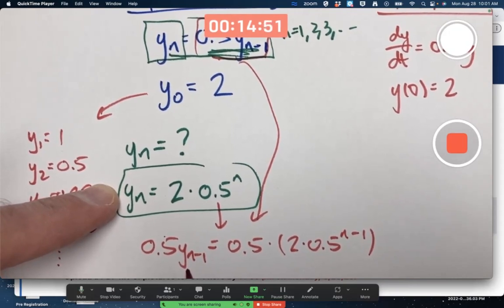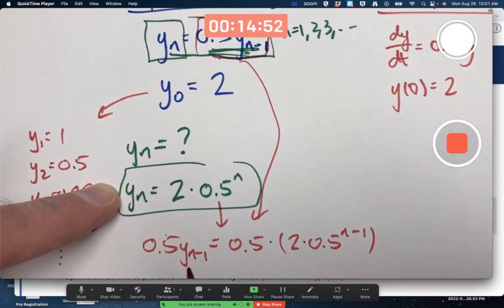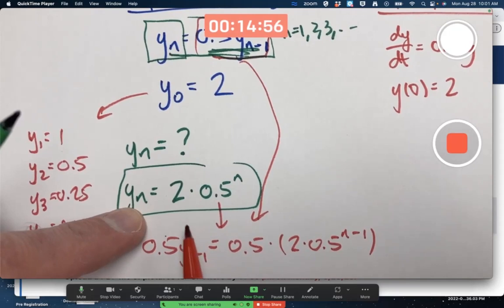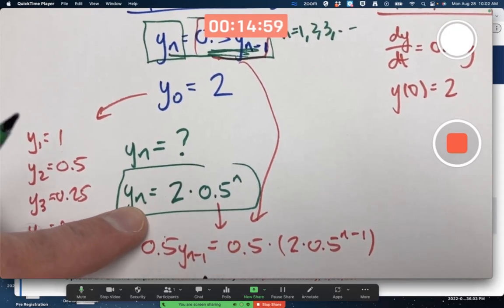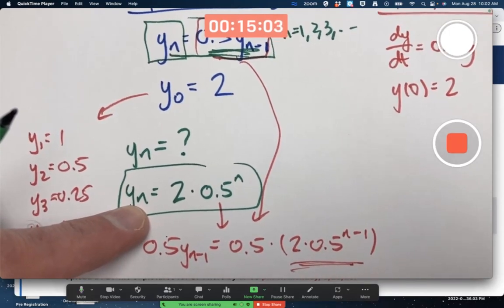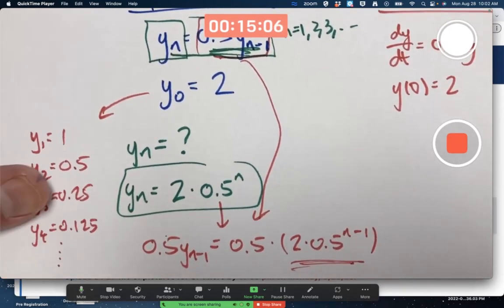Sometimes called a sequence. Often called a sequence. Y sub n for any given n is given by this formula. Therefore, if I replace n with n minus 1, I get that right there.